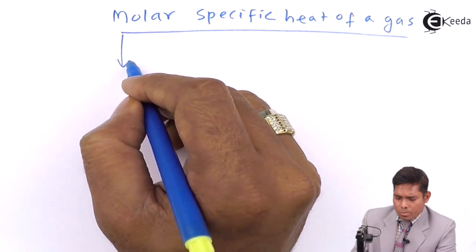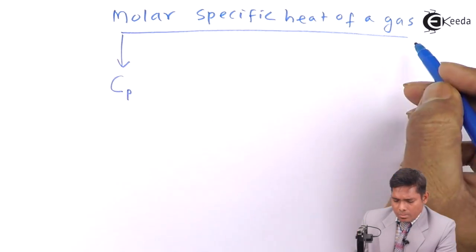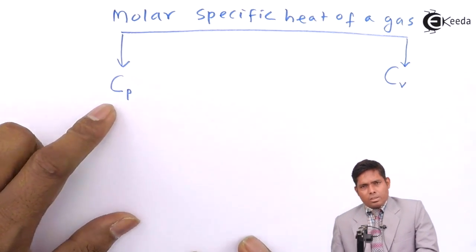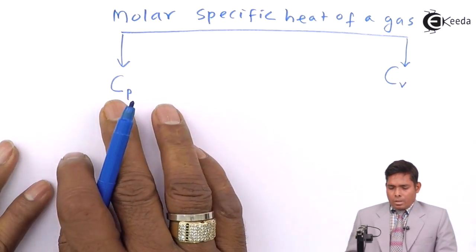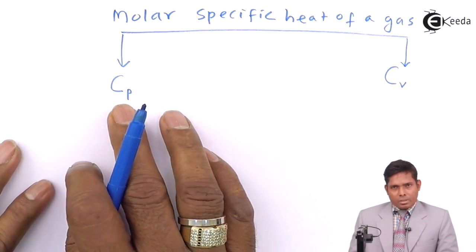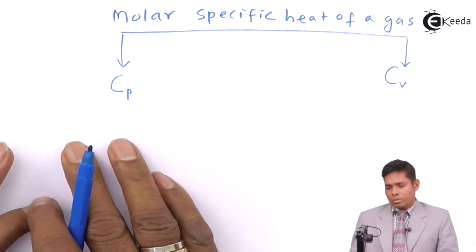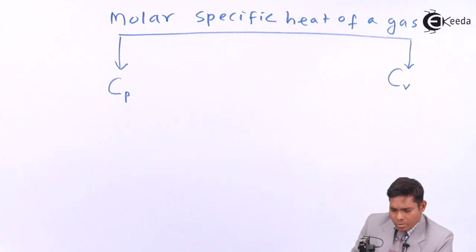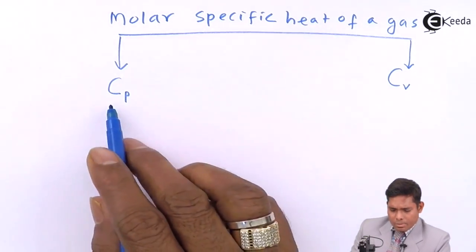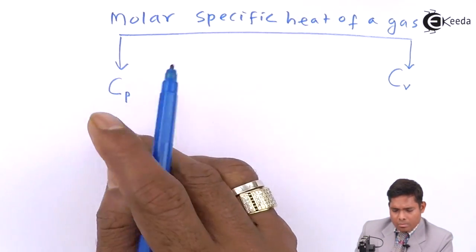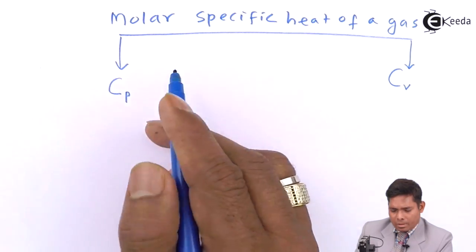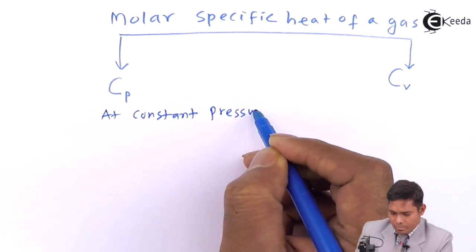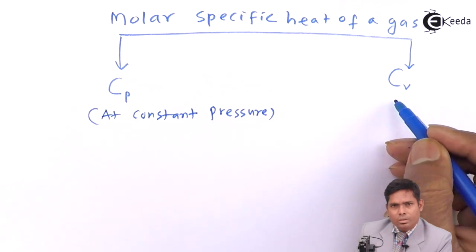Molar specific heat of a gas has two types: capital Cp and capital Cv. The capital C stands for molar. Cp is the molar specific heat of a gas at constant pressure, and Cv is the molar specific heat at constant volume. We will define the two and see how they are related.